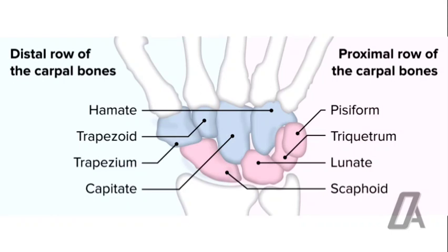These small irregular bones lie in between the long bones of the forearm and the metacarpals, which are the long bones.